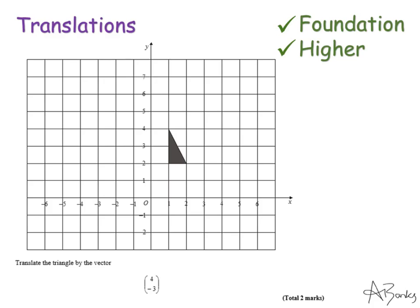They usually give you a translation to complete in the form of a vector. In this question our vector is 4 minus 3. I want to explain what this means. Any vector is written with two numbers placed on top of each other, our x and our y.